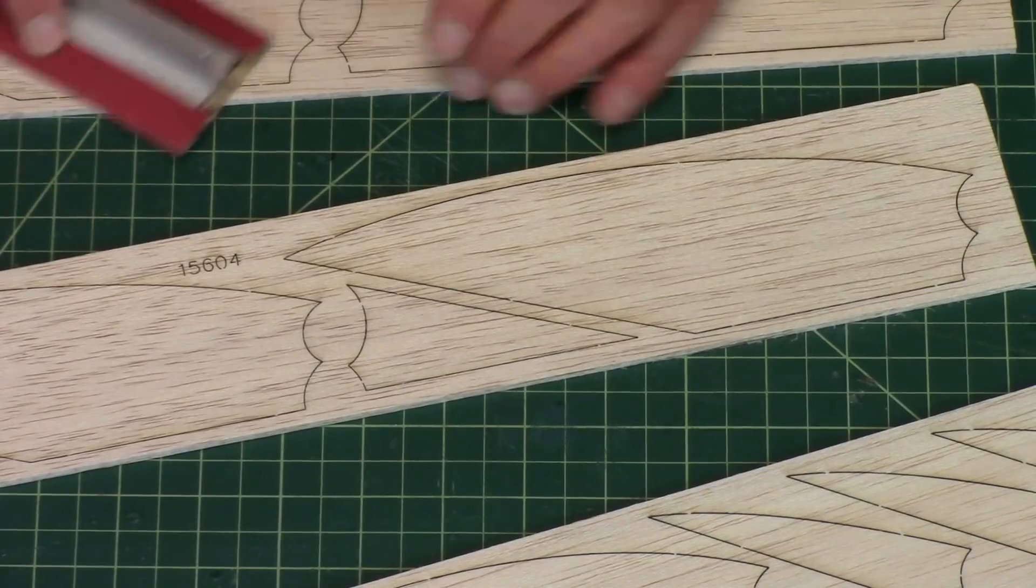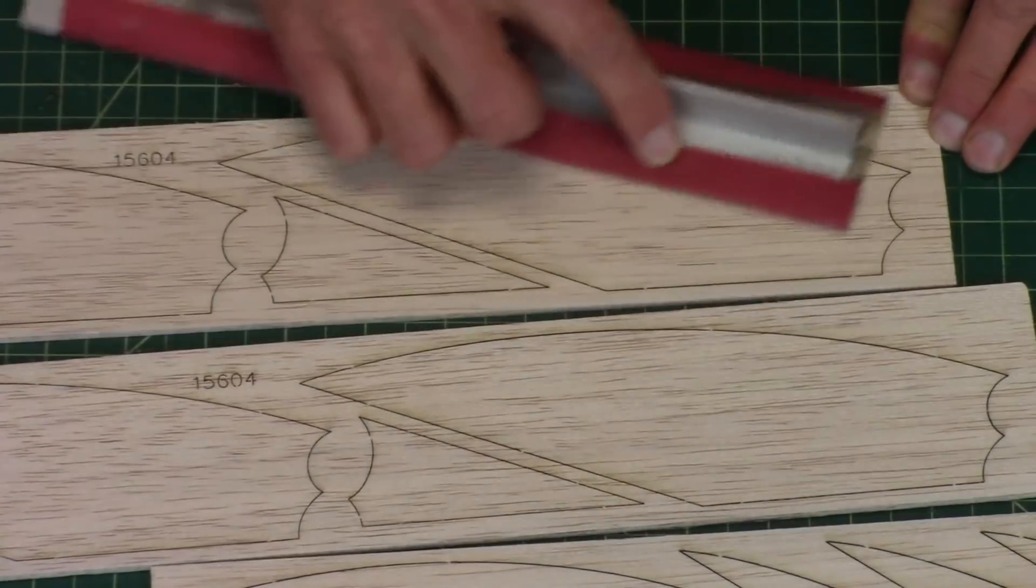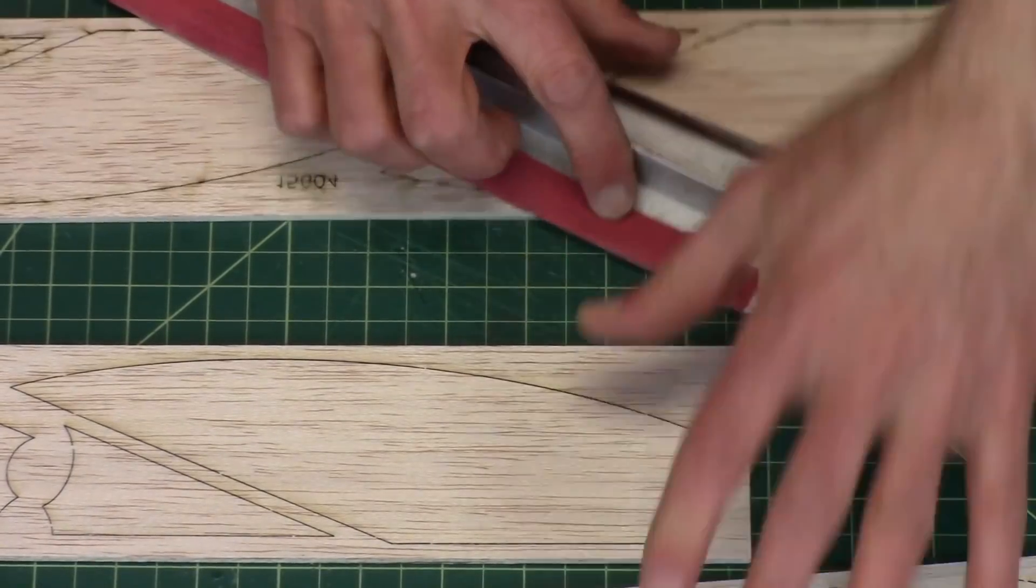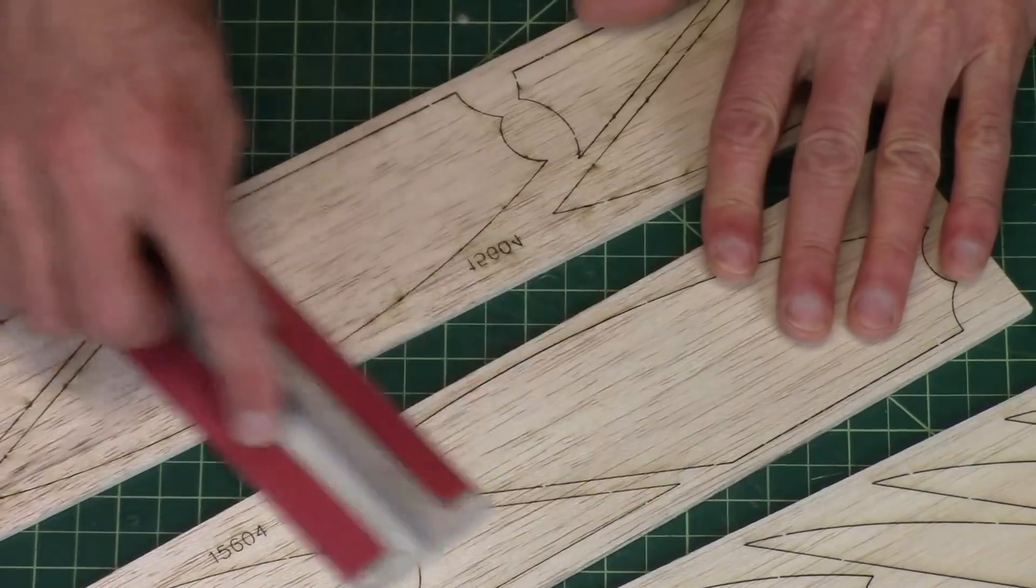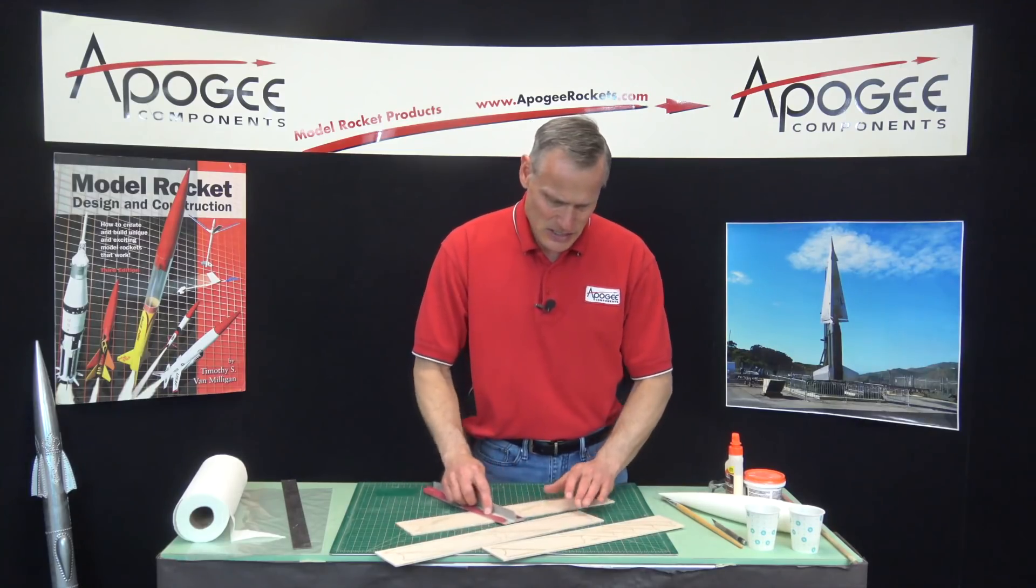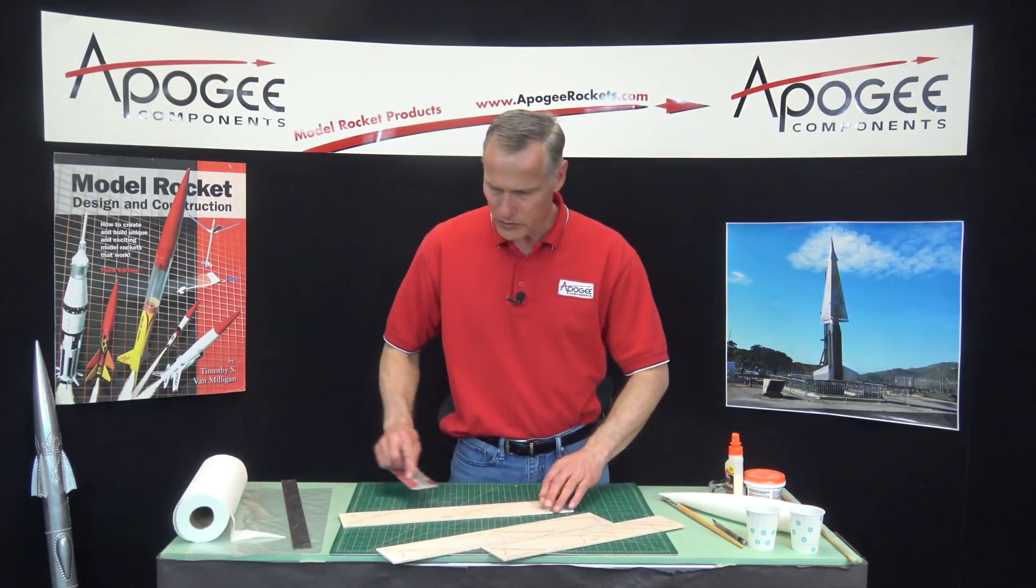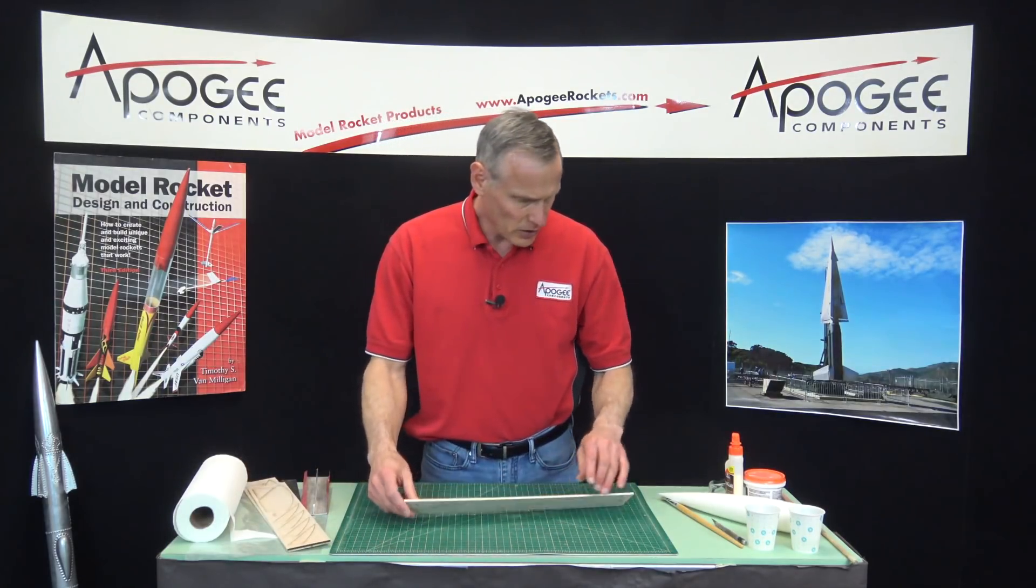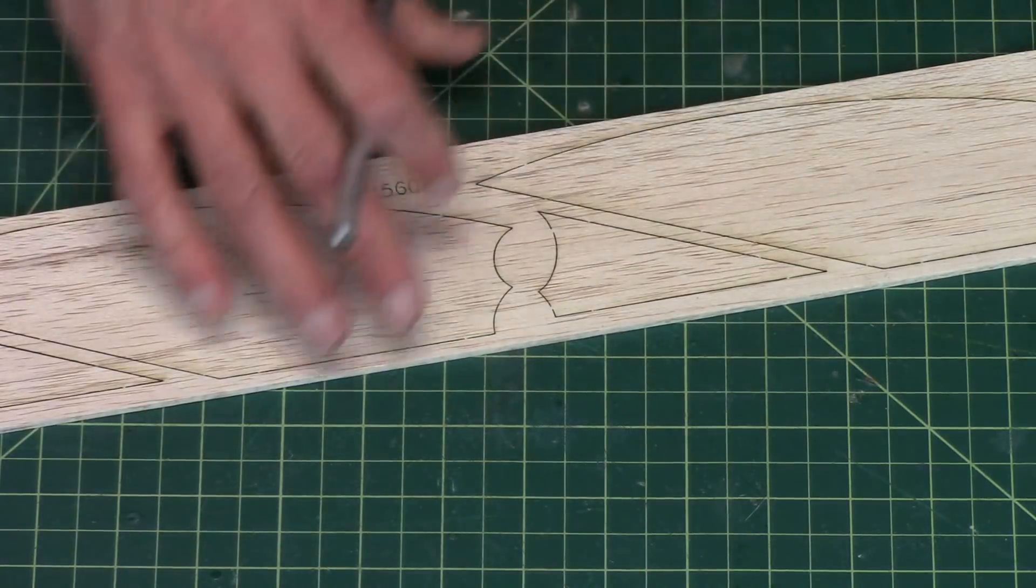Just do both sides. Let me get these out of the way. Our next step is to cut the little tabs that hold the fins in the wood.